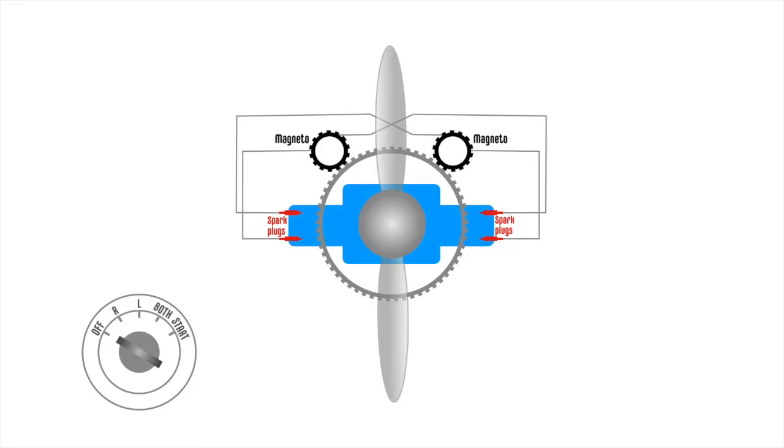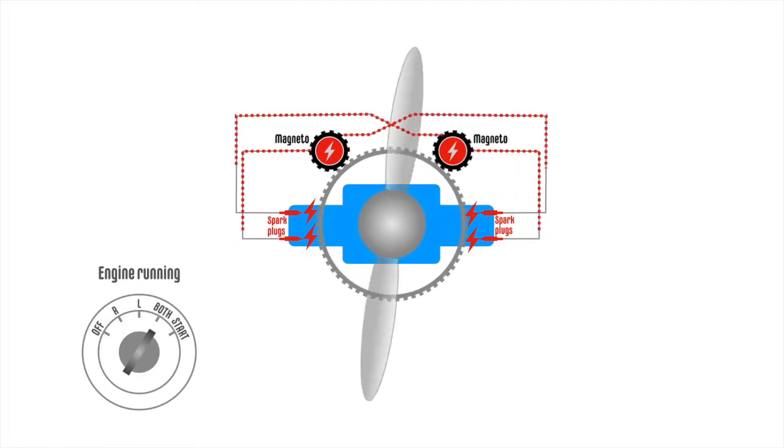A light aeroplane engine has two magnetos attached to it which rotate and generate electrical current for the spark plugs. The fuel and air mixture is ignited by the spark plugs at a precise time in the four-stroke engine cycle.